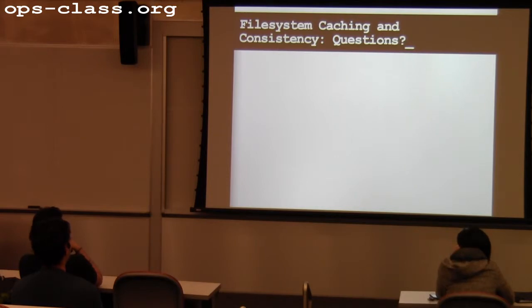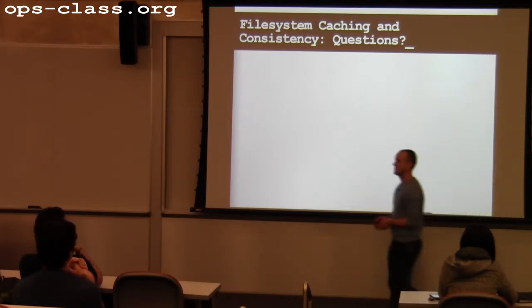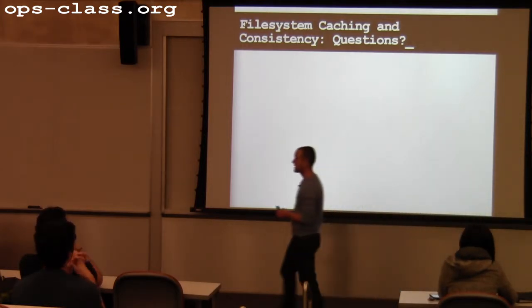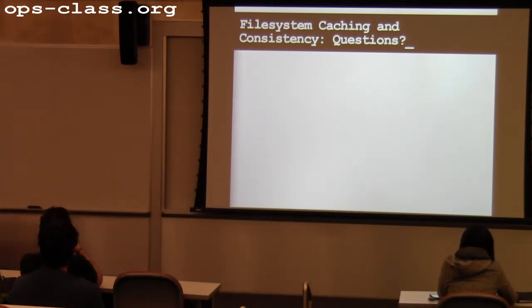Any questions about file system caching and consistency? On Wednesday we finished talking about caching and talked a bit about how caching behavior could potentially exacerbate the consistency guarantees that the file system is trying to provide, and how those guarantees might be more difficult to provide when I start caching things in memory. Any questions about this before we go on?